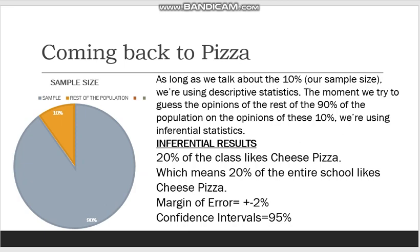On top of that, we can say that the confidence interval of our conclusion is 95%, which basically means that we are 95% sure that the answer lies somewhere between 18% and 22%. We can change this by, for example, increasing our sample size. Remember how the pizza guys may go to other classes? If they do, then they would not be drawing their conclusions from 10% of the population, but rather say 30%. Conclusions drawn from 30% of the population are bound to be more accurate than conclusions drawn from only 10%. Thus, as the sample size increases, our confidence interval goes up. We'll talk about confidence intervals more in the next few videos.